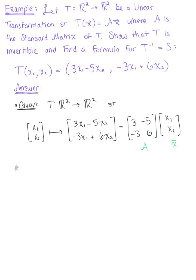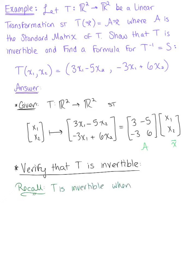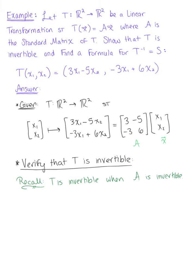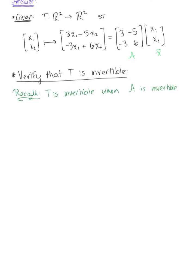So we are now ready to get started and we want to begin by confirming that T is invertible. And so we want to recall that T is invertible when A is invertible. So T is invertible if and only if A is invertible. So we'll use this now and the standard matrix of T that we found in the first part to help confirm this.